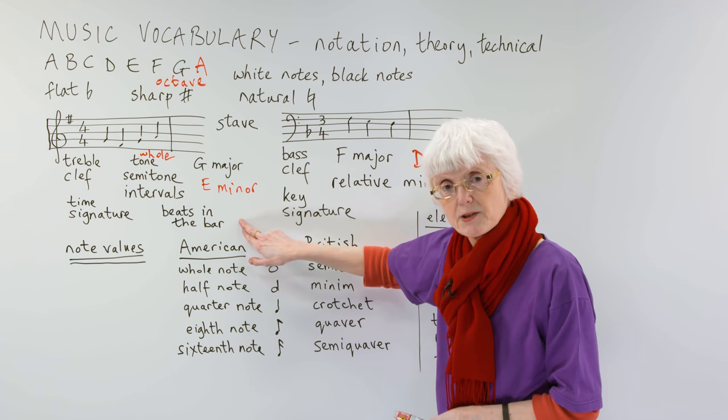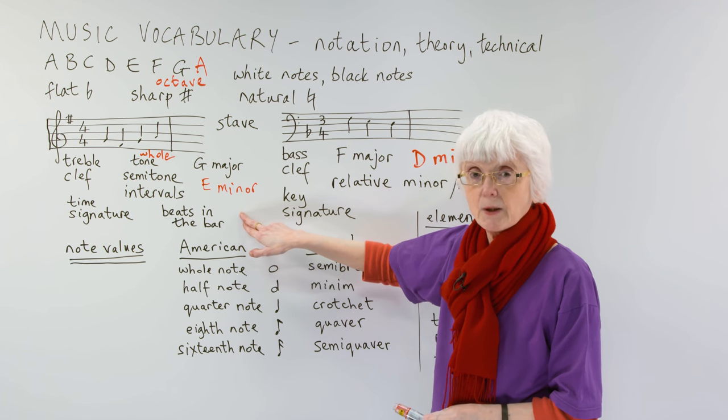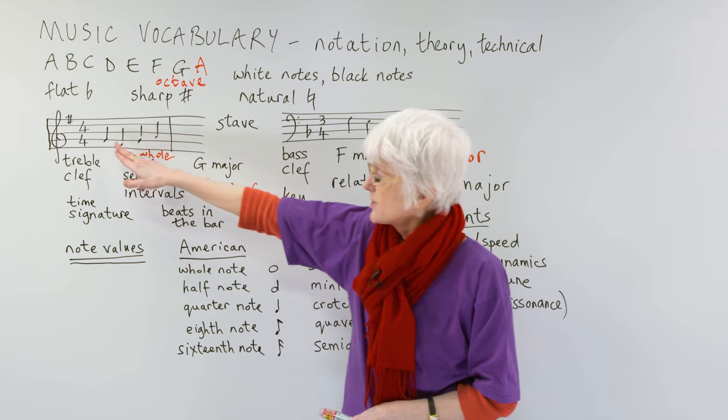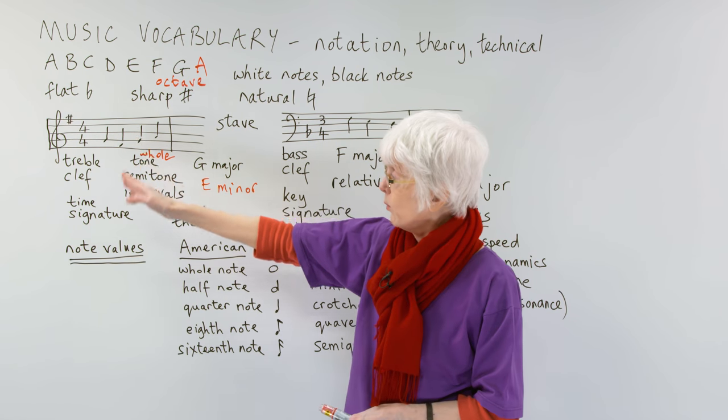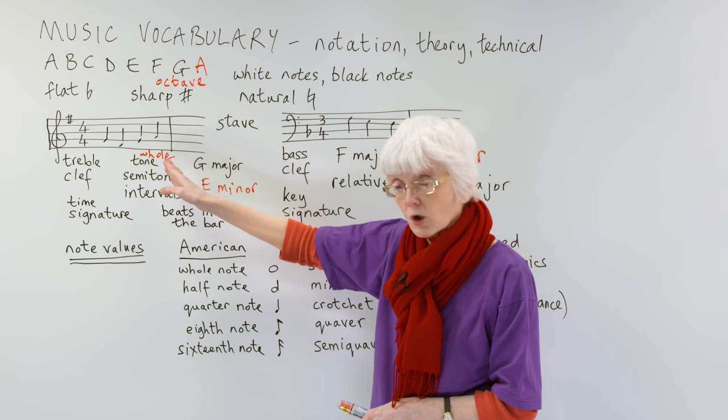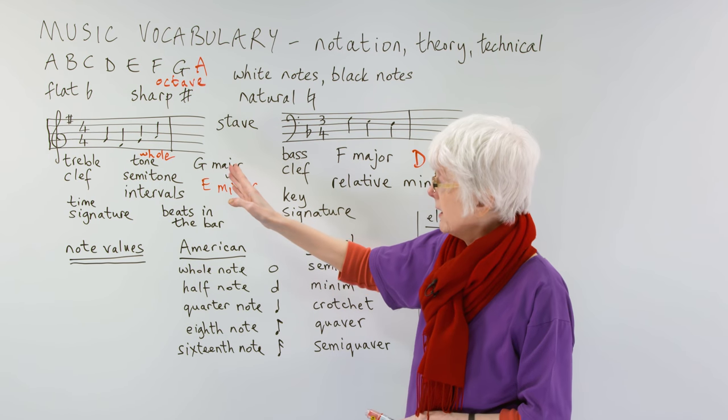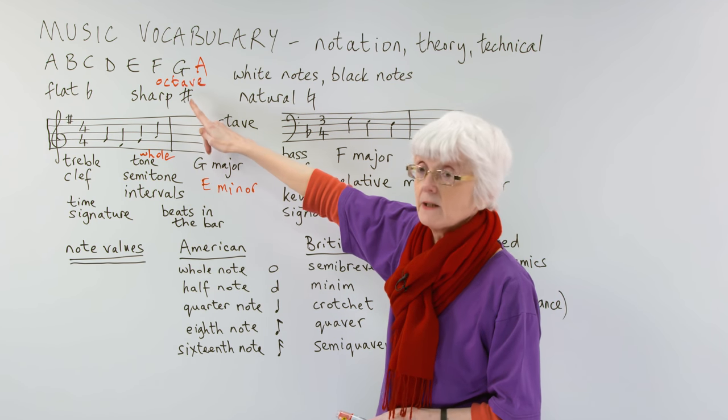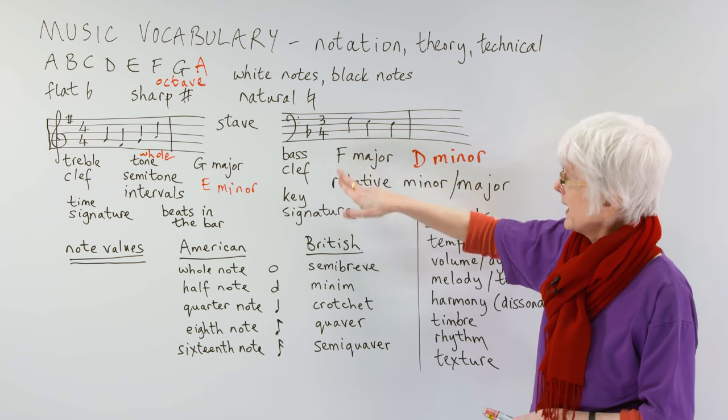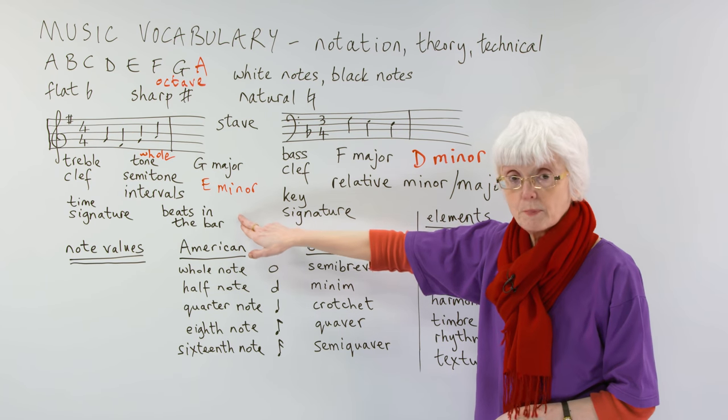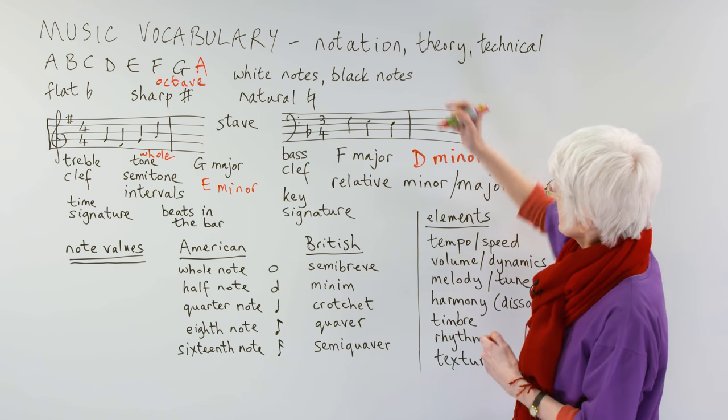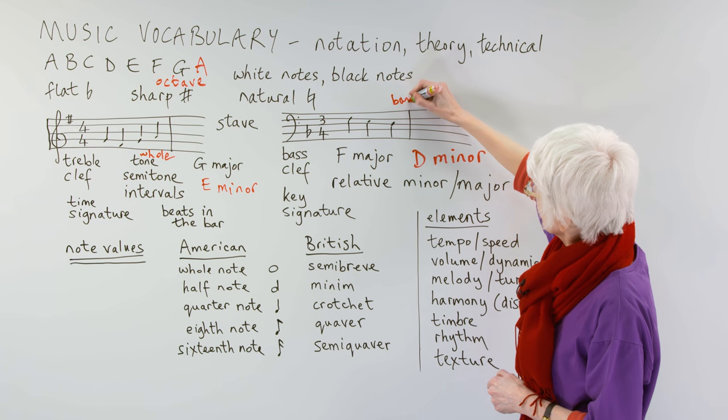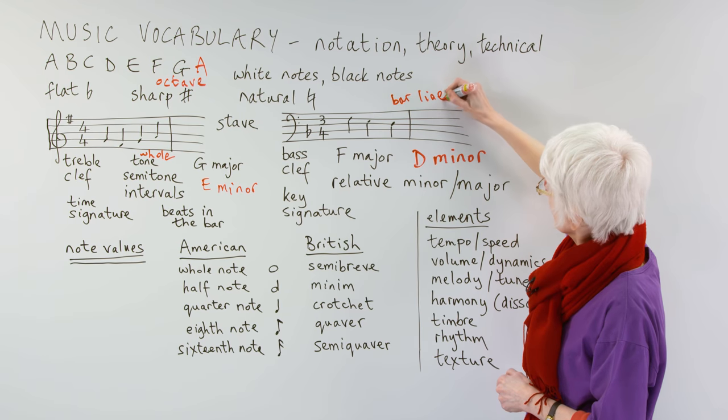Whole tone. And then you'd say a third, a major third, a minor third, a fifth, etc. So just to explain this one, beats in the bar means the number of beats, four, four, one, two, three, four, beats in the bar. This is a bar line. This one has three beats in the bar, one, two, three, and here's another bar line.